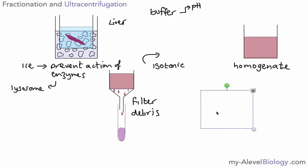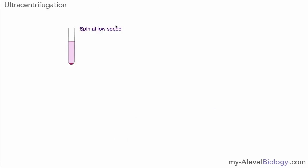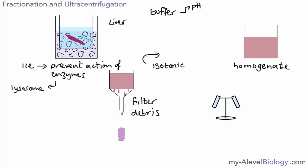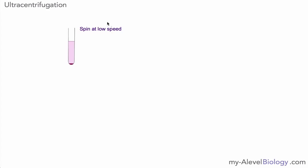So we filter out to remove any debris or any parts that we don't want and then we can start the process of centrifugation and this is what we were talking about using our machine that we just talked about a minute ago. Okay so how does this actually work? Well what we do is we can spin our homogenate in our centrifuge and we start off by spinning at a very low speed.